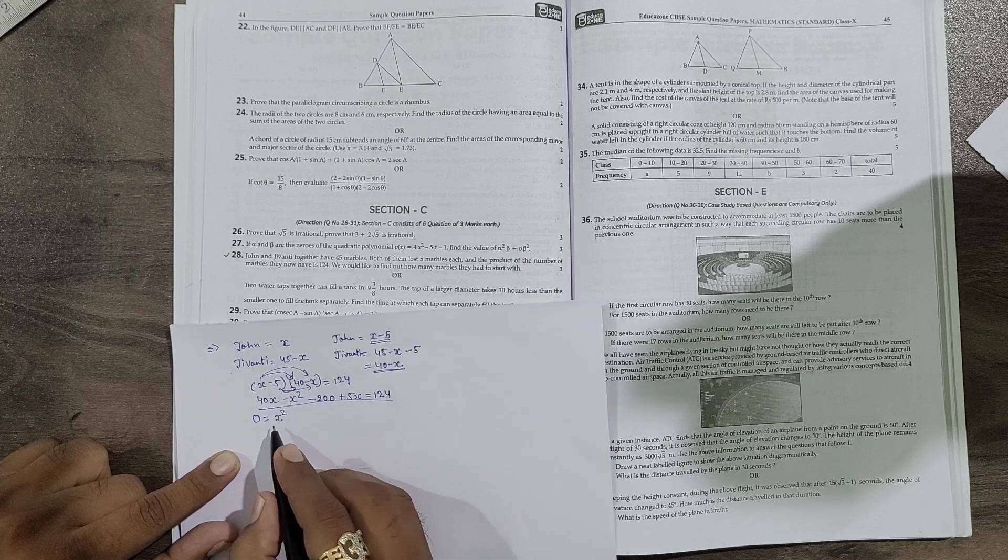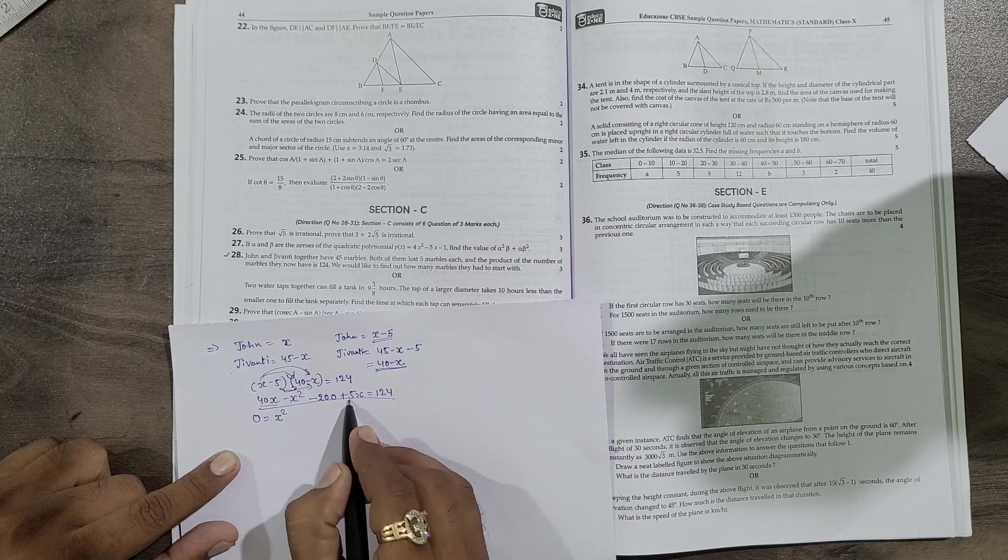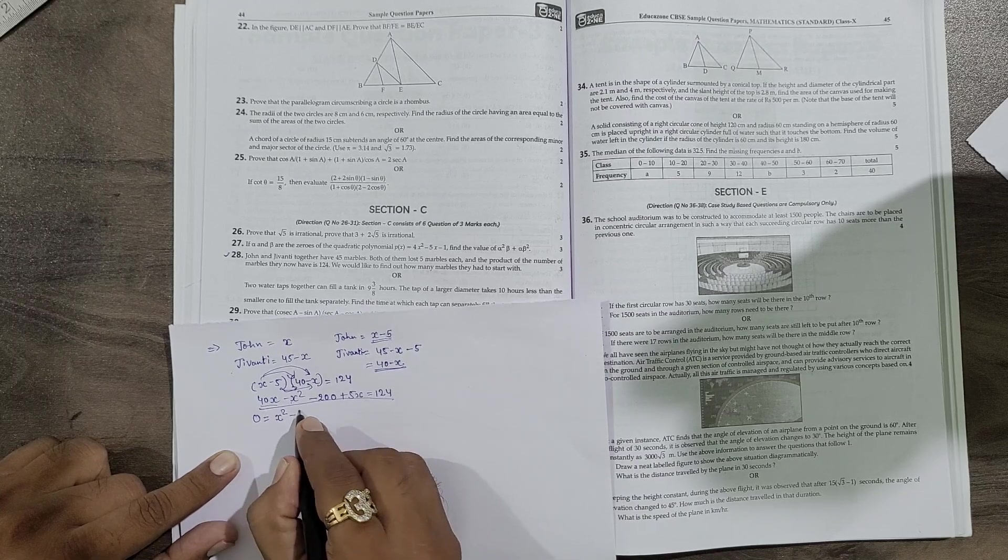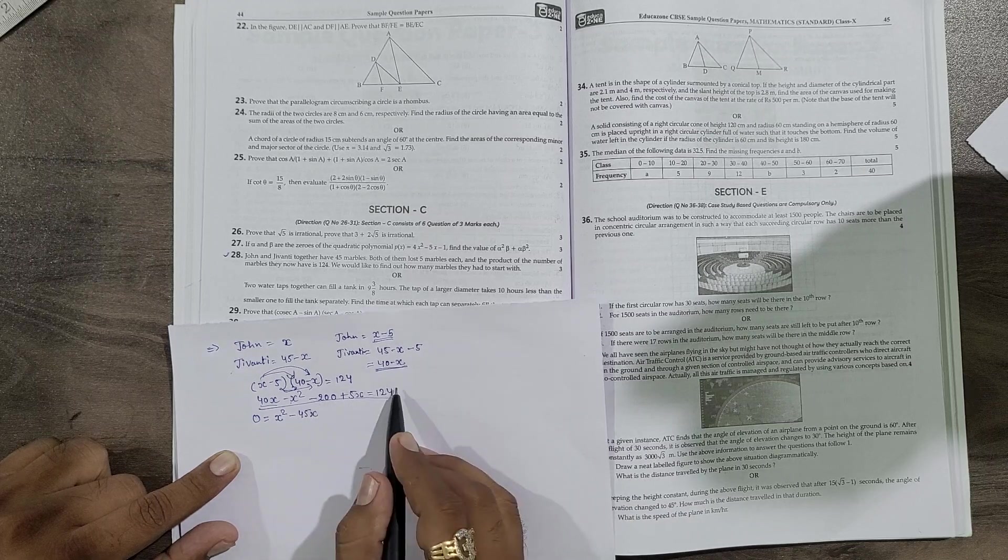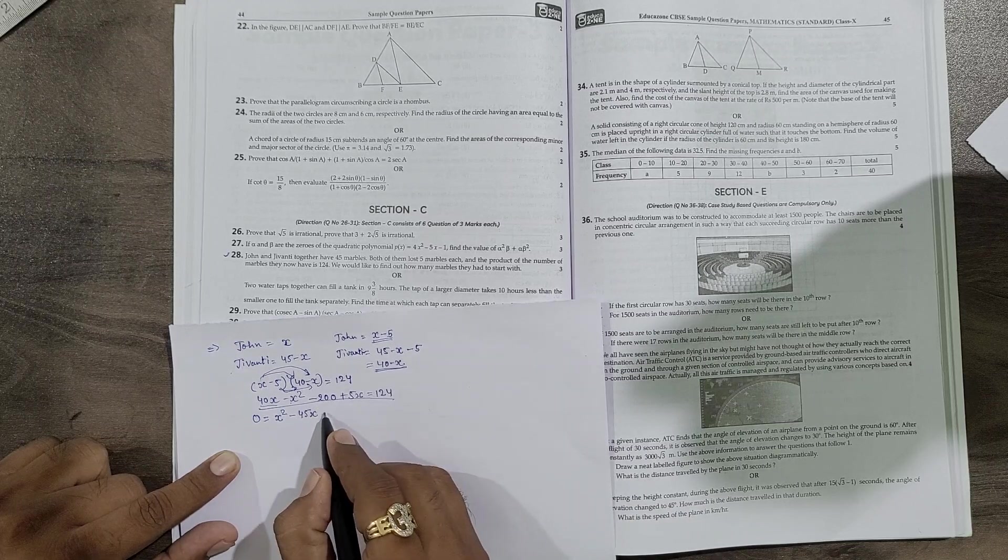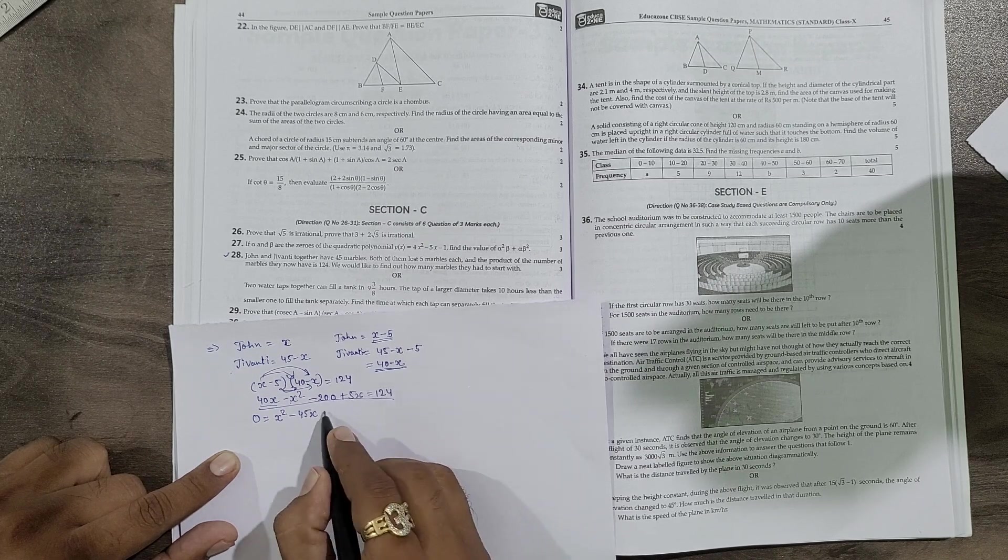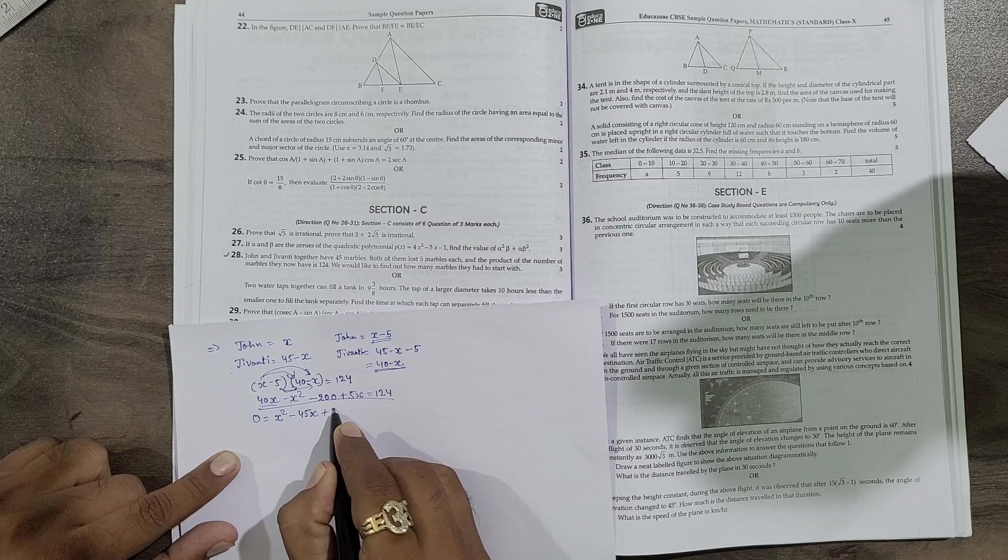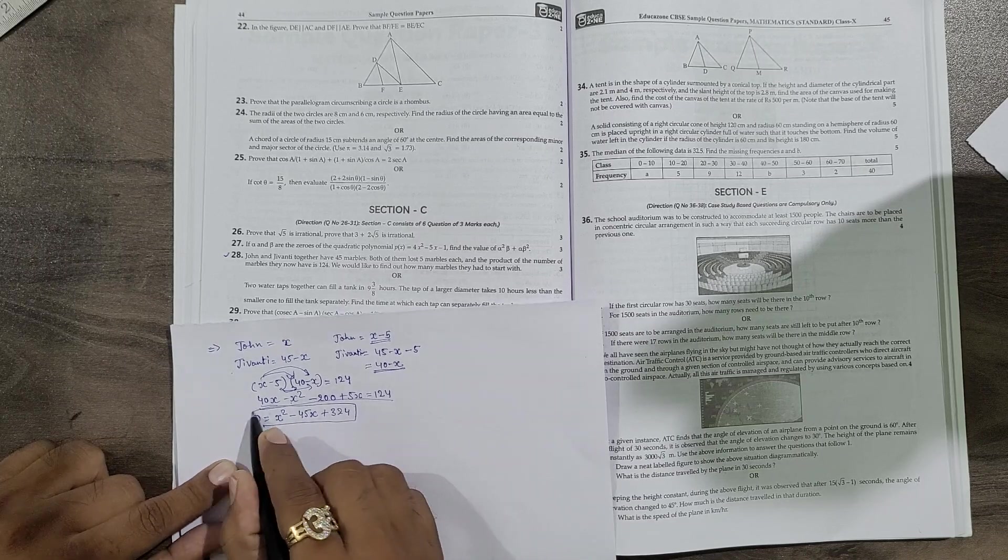Now 40 plus 5 is 45, on that side will become minus 45x. And here minus 200 on that side so that will be plus 200. 200 plus 124 that will give you plus 324. So now this is your quadratic equation: x² - 45x + 324 = 0.